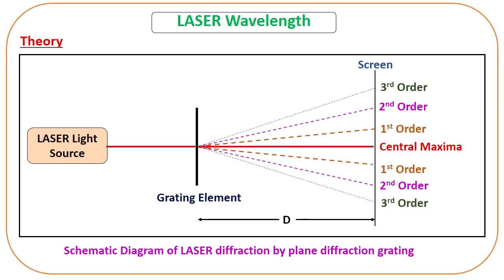Here you can see the schematic diagram. This is the laser source, this is the grating stand, and this is the grating. When the laser light is incident on this grating, diffraction takes place, and this is the screen. D determines the distance between the grating element and the screen. After diffraction, different spots can be seen on the screen. The central spot is known as central maxima.